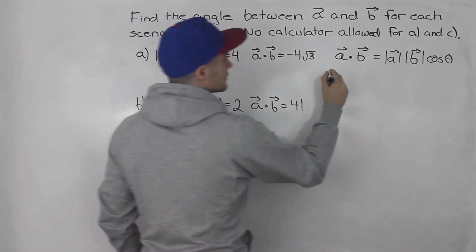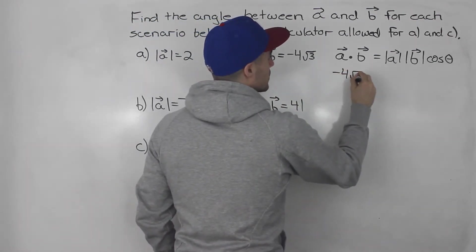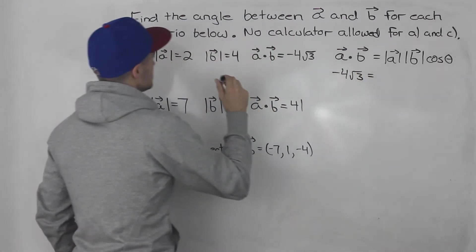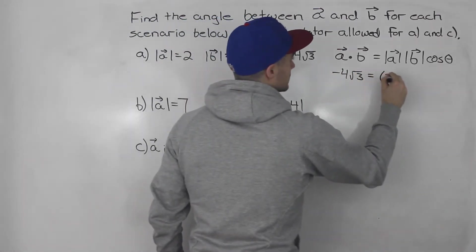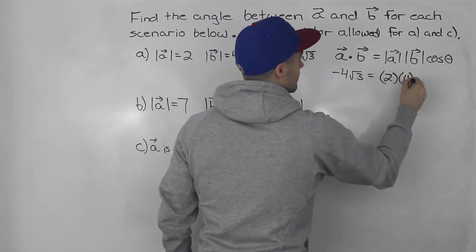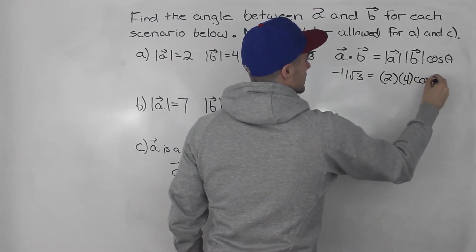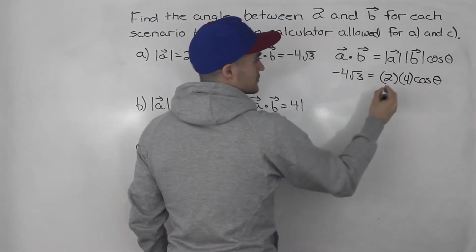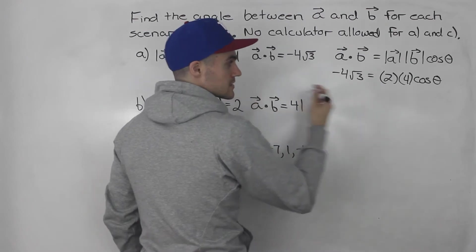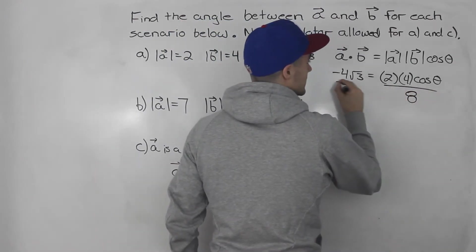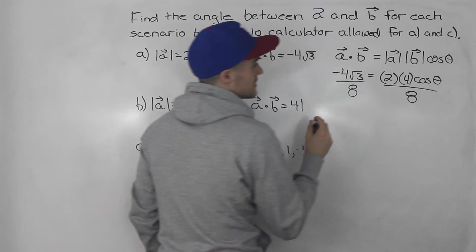Notice that we can sub in everything in this equation and solve for theta. So we know the dot product is negative 4 root 3, the magnitude of a is 2, magnitude of b is 4. We're going to solve for cos theta. So 2 times 4 is 8. Notice we can divide both sides by 8 to get cos theta by itself.